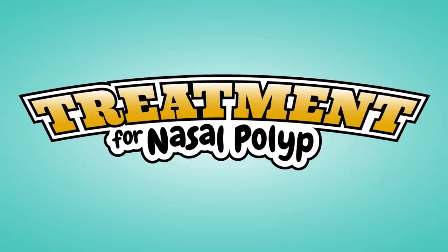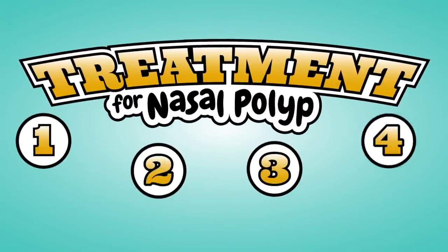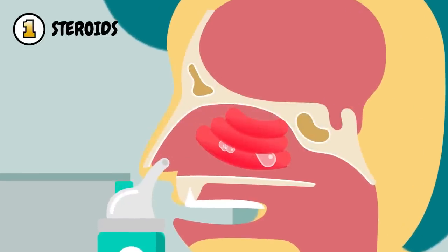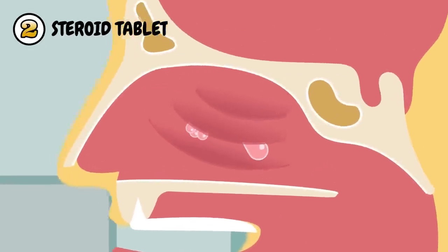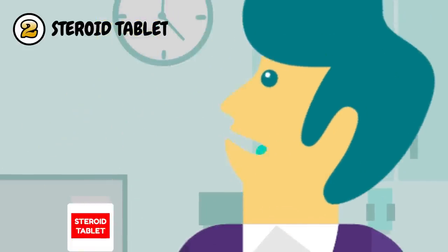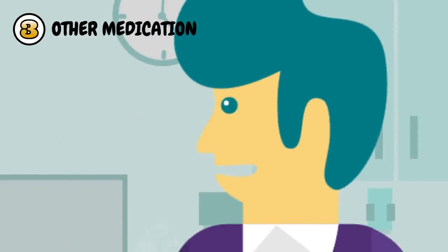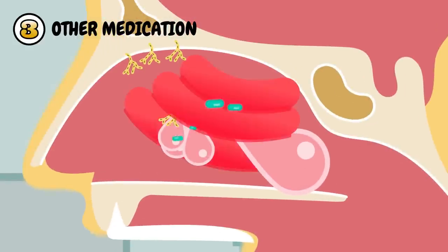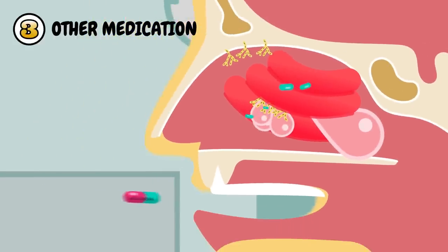Treatment for nasal polyps: 1. Steroids — the doctor may prescribe a steroid spray or nose drops, which shrink the polyps by reducing inflammation. 2. Steroid tablets — prescribed in cases of larger polyps or more severe inflammation. 3. Other medications — antihistamines for allergies, antibiotics for bacterial infections, and antifungal drugs for fungal allergies.